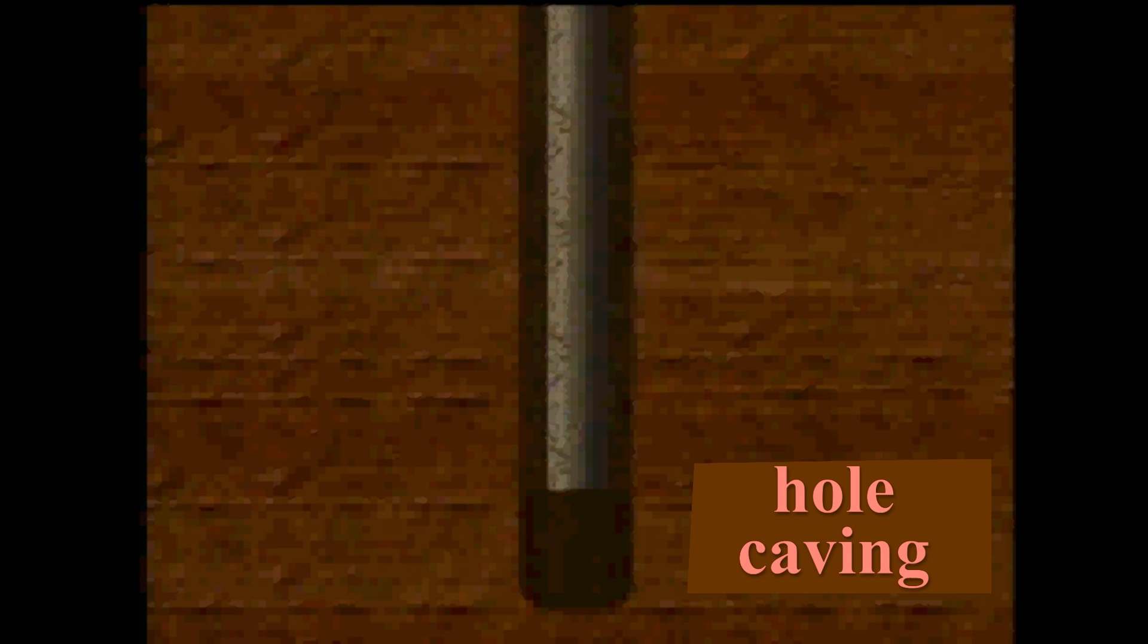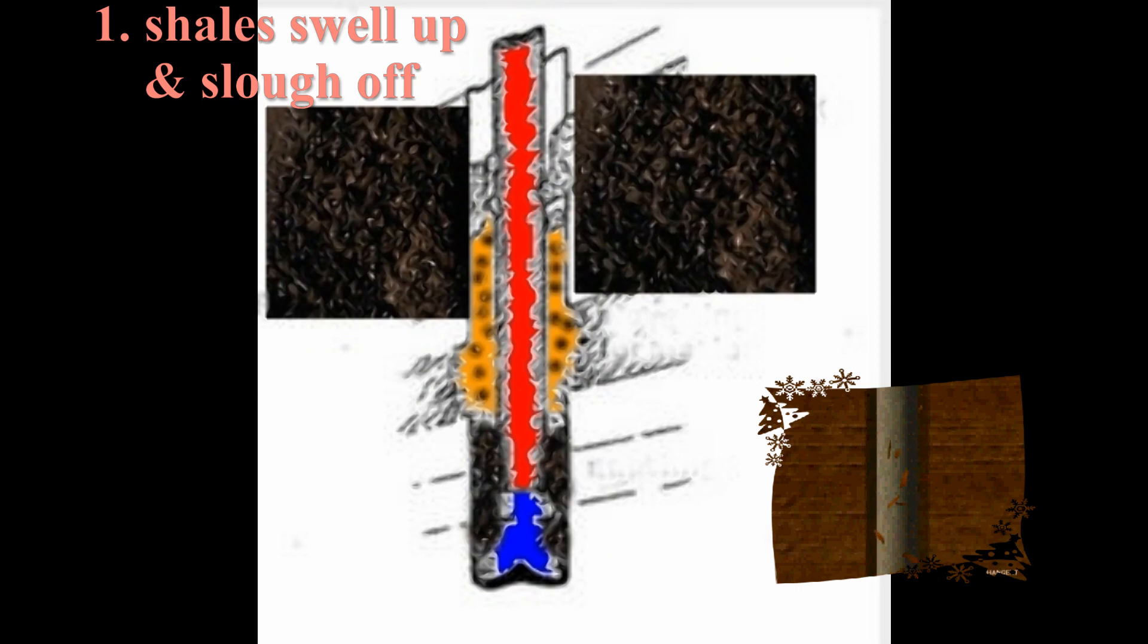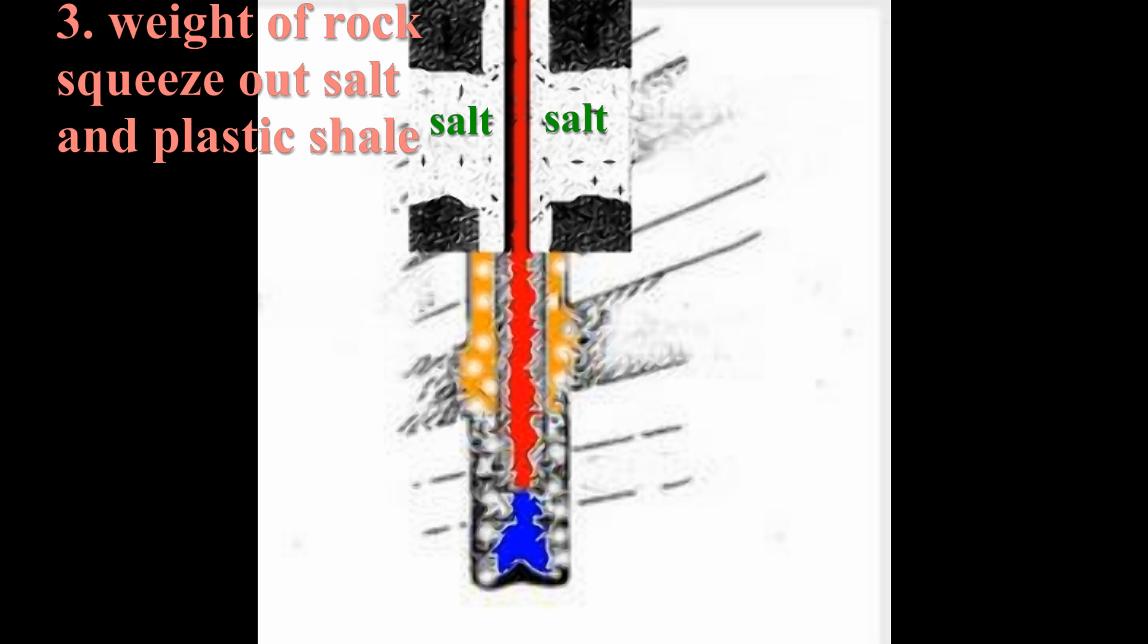Hole caving is another drilling problem. Here, the side of the hole caves in, causing the pipe to become stuck. There are many reasons for cave-ins. Here are three common ones. One, absorbing the mud filtrate, some shales swell up and slough off their outer layers into the well. Two, large quantities of material from uncemented or fractured formations fall into the hole. Three, the weight of the overlying rock forces or squeezes out salt and plastic shale formations into the wellbore.